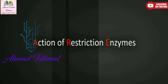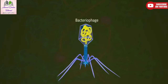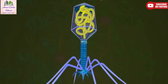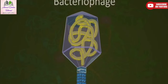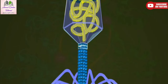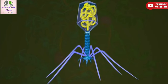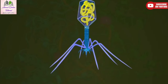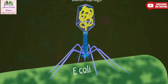Stuart Lynn and Werner Arber in 1963 isolated two enzymes which restricted the growth of bacteriophage in bacterium E. coli. One of these enzymes added methyl groups to DNA and the second one cut DNA.